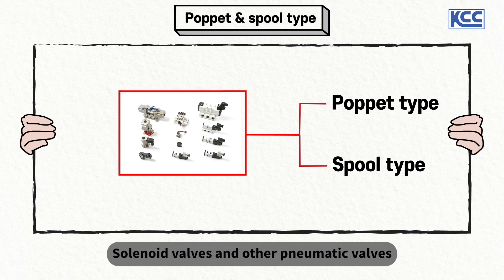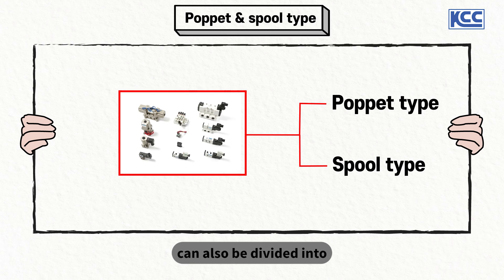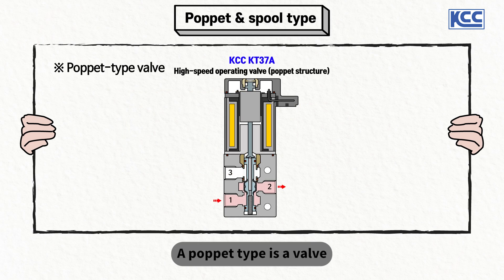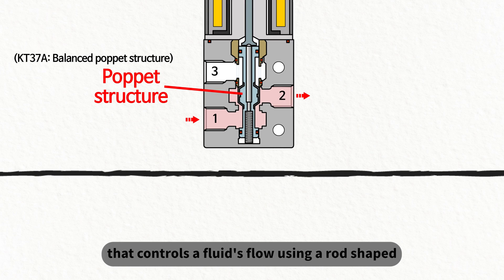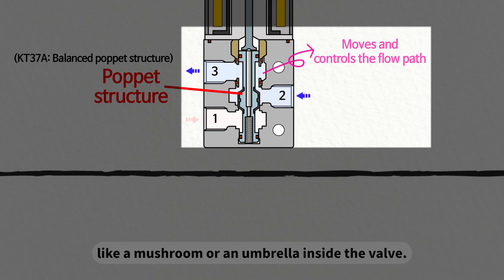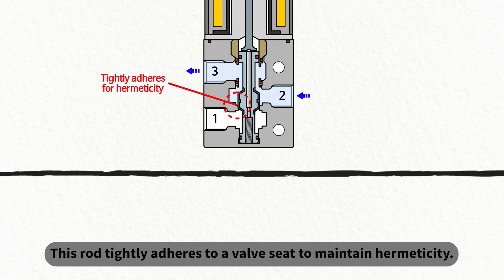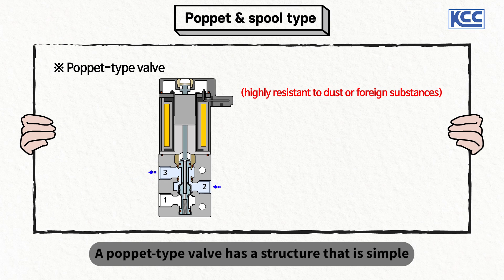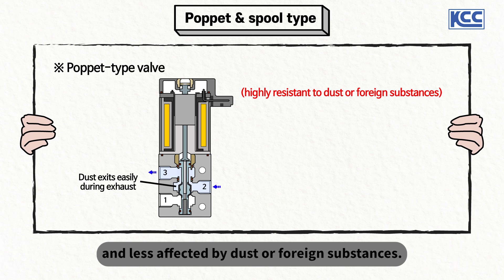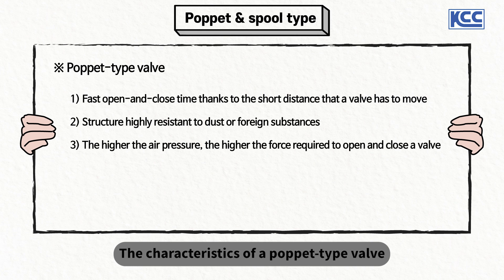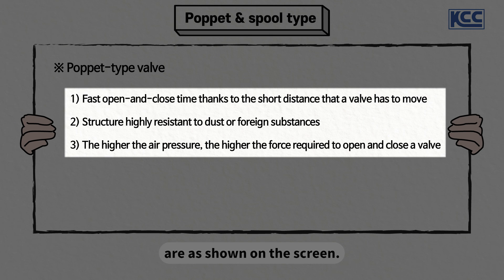Solenoid valves and other pneumatic valves can also be divided into poppet type and spool type depending on the structure. A poppet type is a valve that controls a fluid's flow using a rod shaped like a mushroom or an umbrella inside the valve. This rod tightly adheres to a valve's seat to maintain hermeticity. A poppet type valve has a structure that is simple and less affected by dust or foreign substances.